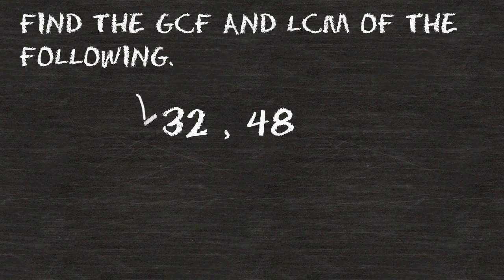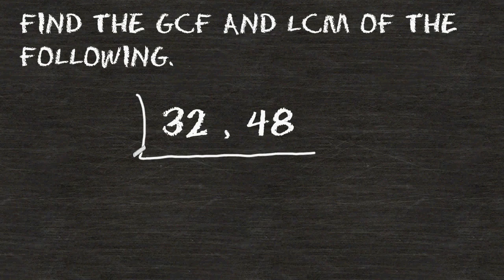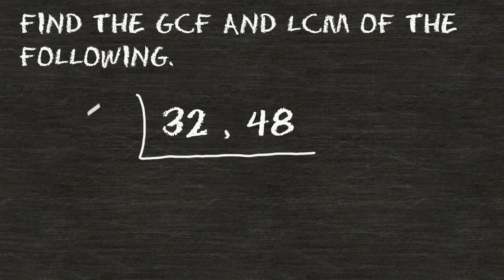The first thing that we are going to do is draw what looks like an upside down division sign, and then on the outside of this sign we are going to write a common factor of 32 and 48. You do not have to start with the greatest common factor. Any common factor will do other than the number 1.